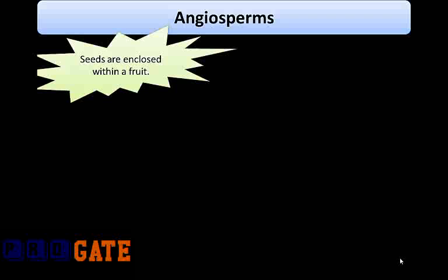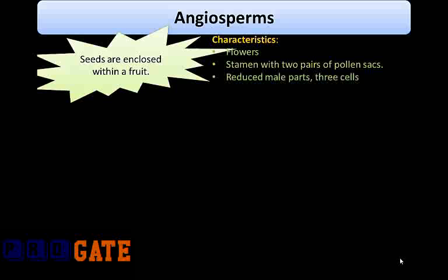Angiosperms are so named because the seeds are enclosed within a fruit of some sort. There are certain characteristics of angiosperms. First, it has flowers — flowers are the reproductive organs of the flowering plants and are the most remarkable feature distinguishing them from other seed plants. Next, stamens with two pairs of pollen sacs; stamens are much lighter than the corresponding organs of gymnosperms.